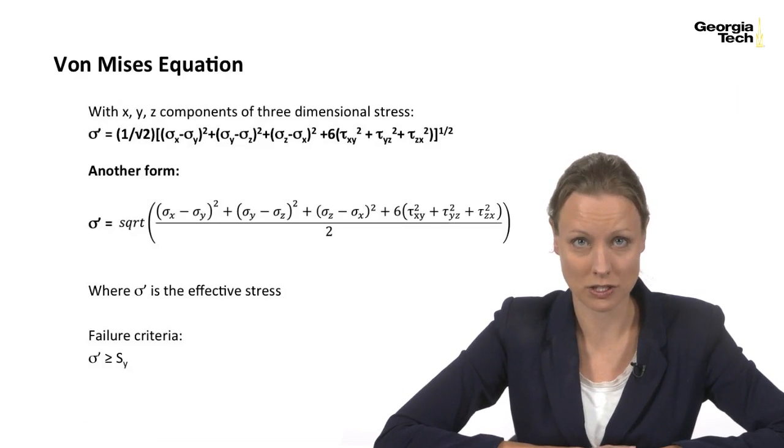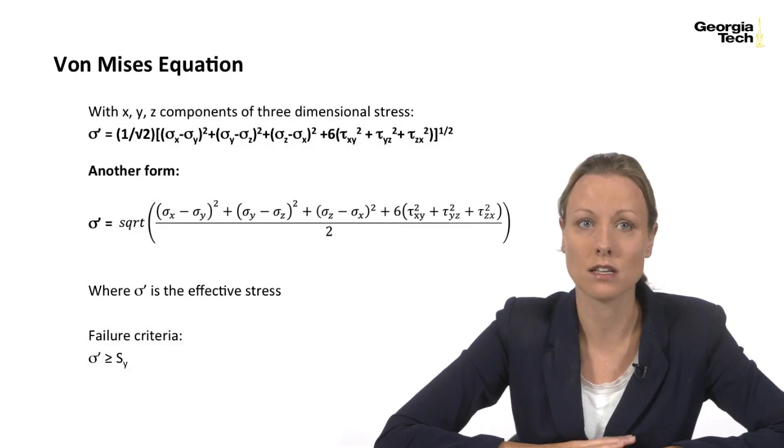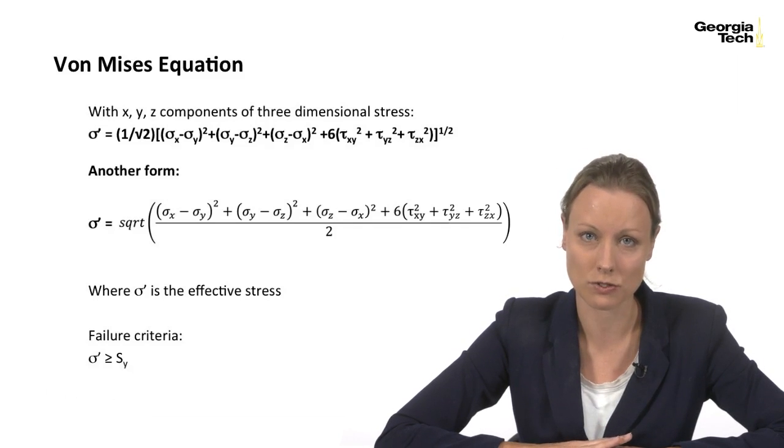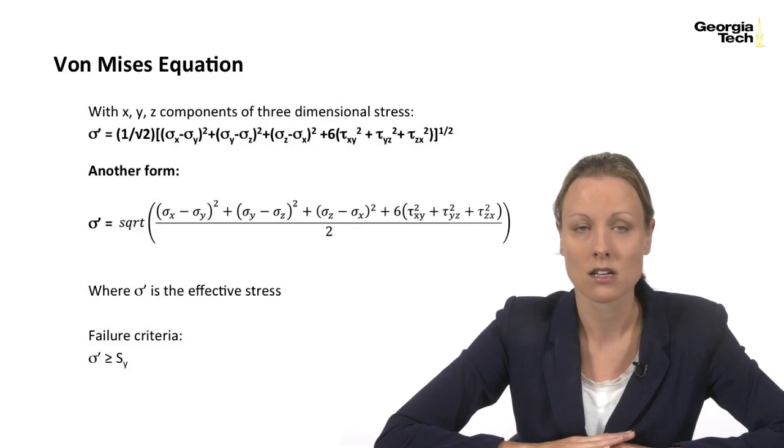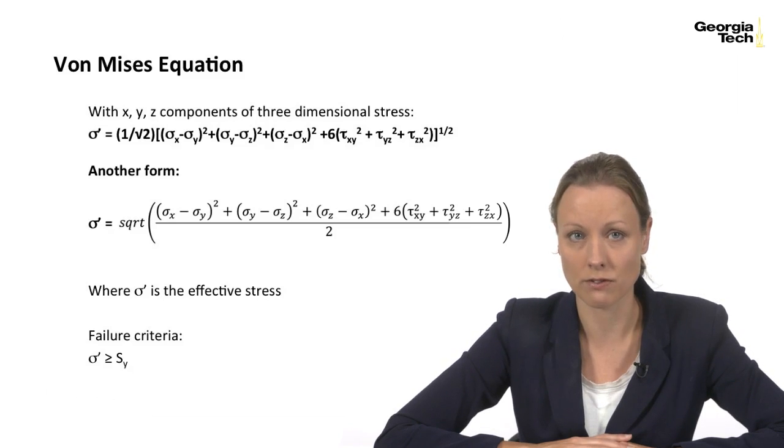Last time we talked about the von Mises equation, which is part of the maximum distortion energy theory. The sigma prime stands for sigma effective, and that's equal to the equation that you can see to the side. That equation is for a tri-axial stress state, and the stresses have been calculated in the x, y, and z directions. Sometimes students find the second equation as an easier form to remember. Keep in mind that the failure criteria for von Mises theory is that when your effective stress is greater than your yield strength, you have hit yield. So your component is no longer in a safe design envelope.